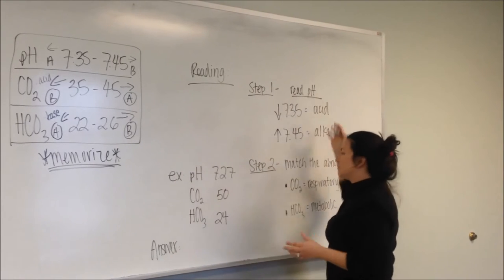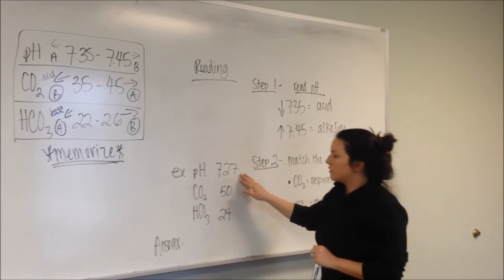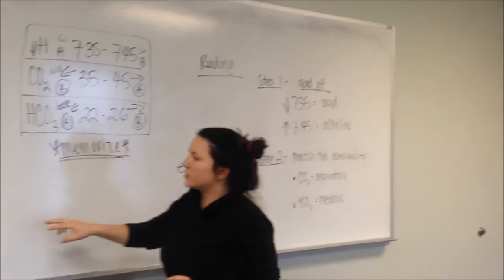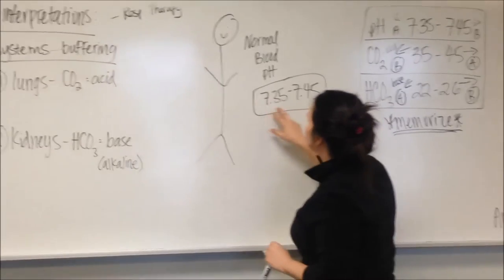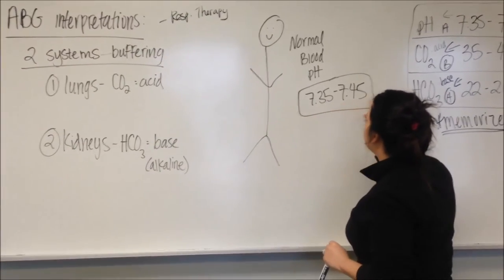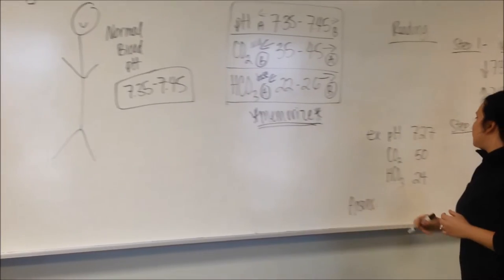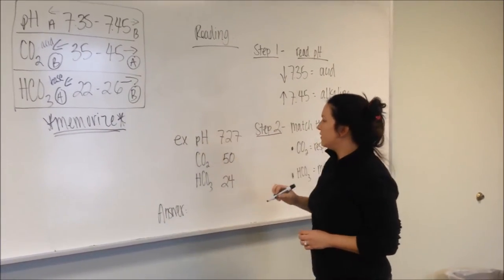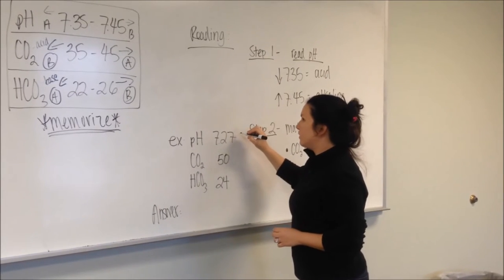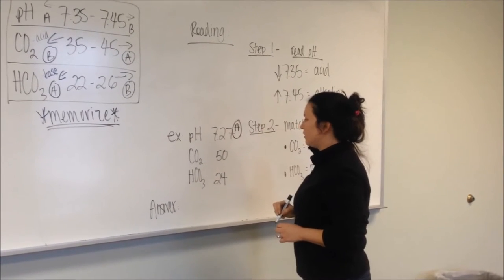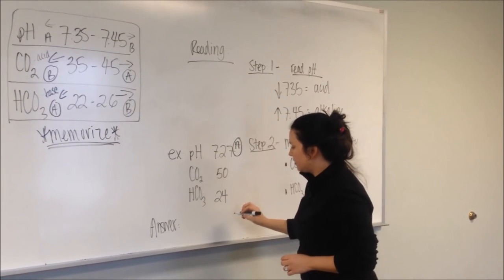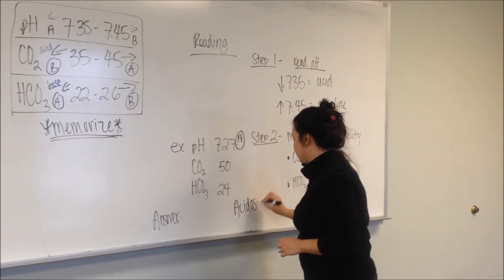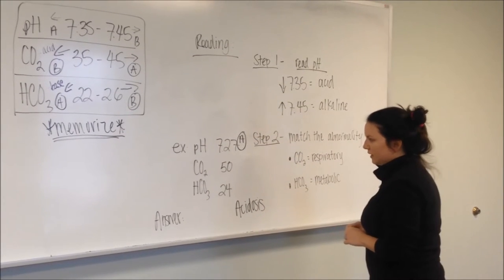So we're going to do this example. Step one, read the pH. Sounds simple enough, but the pH is our key to the entire body. The blood pH that's circulating around our patient is going to tell us if there's too much acid, too much base. So 7.27 is below 7.35, so therefore it is an acid. Then I go and put acidosis on my answer.